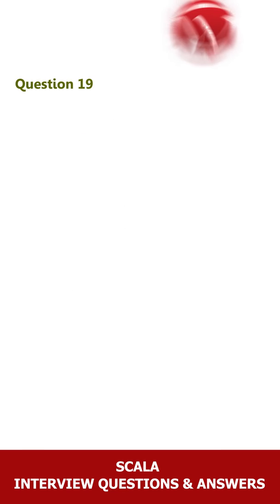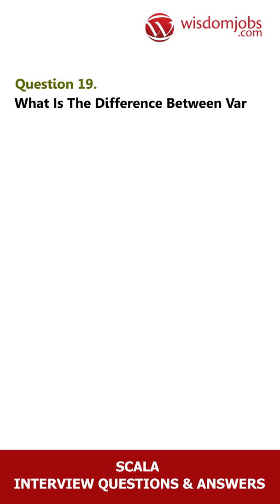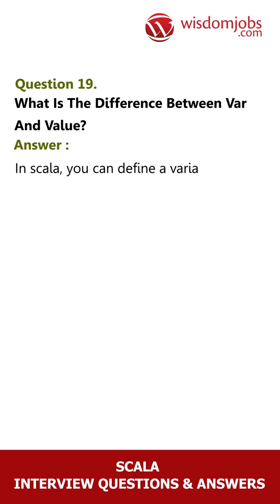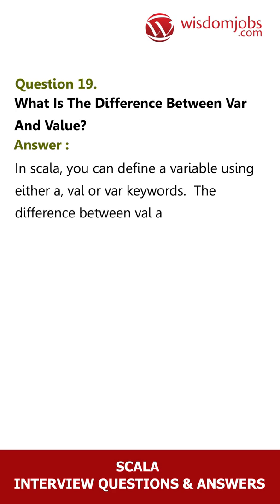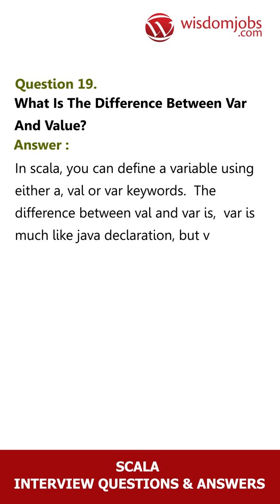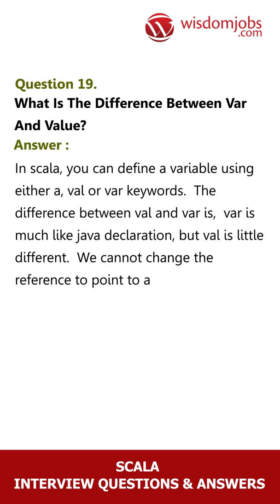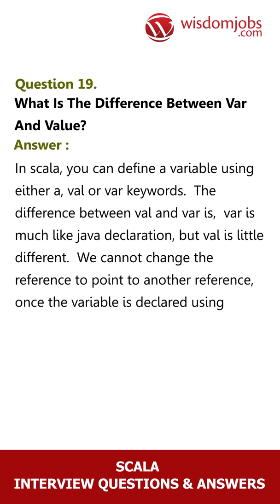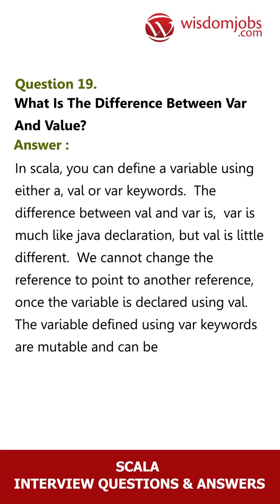Question 19: What is the difference between var and val? Answer: In Scala, you can define a variable using either a val or var keyword. var is much like a Java declaration, but val is a little different — we cannot change the reference to point to another reference once the variable is declared using val. Variables defined using the var keyword are mutable and can be changed any number of times.